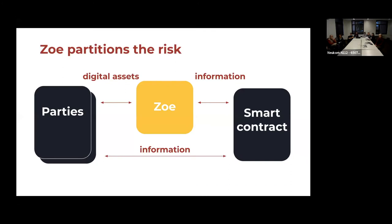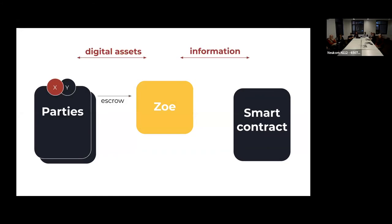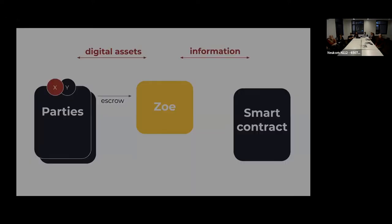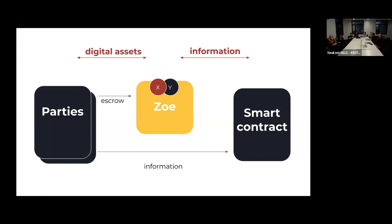I have a very high level diagram here. The parties to the smart contract on the left exchange digital assets with Zoe — they escrow their digital assets with Zoe. The parties are able to talk to the smart contract, and the smart contract is able to talk to Zoe, but importantly, the smart contract never actually gets access to the digital assets. Let's walk through this with an example of making a bid on an auction. First, we escrow our goods with Zoe. Then we tell the smart contract: I put these in escrow, I'd like to make a bid on this auction. The smart contract may send information back saying it has accepted the offer.